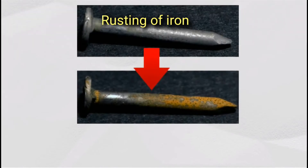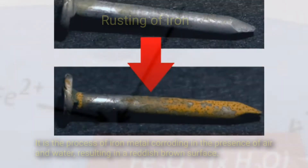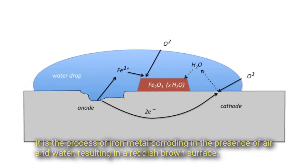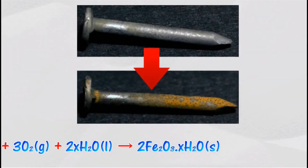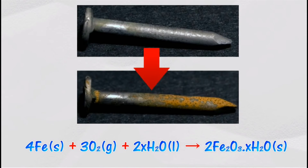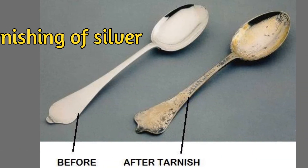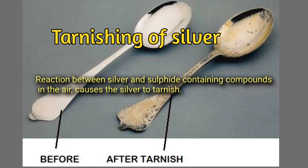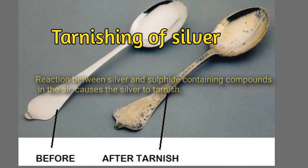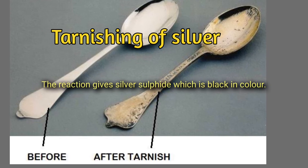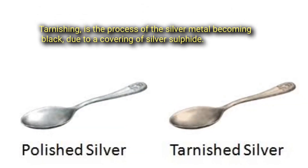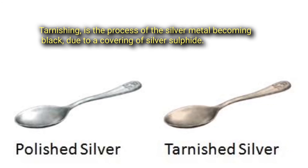Examples of corrosion and their reactions. Rusting of iron: the most commonly seen example — iron metal corrodes in the presence of air and water, resulting in a reddish-brown surface. The reaction can be seen as a typical electrochemical cell reaction. Tarnishing of silver: a reaction between silver and sulfur-containing compounds in the air causes silver to tarnish, forming silver sulfide, which is black in color.